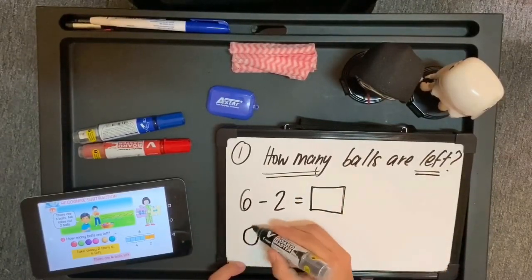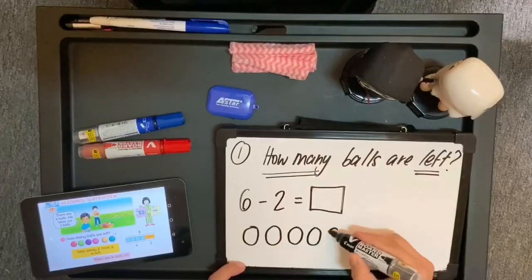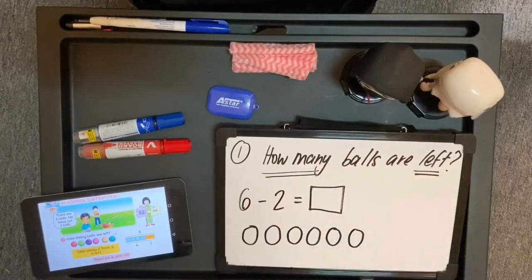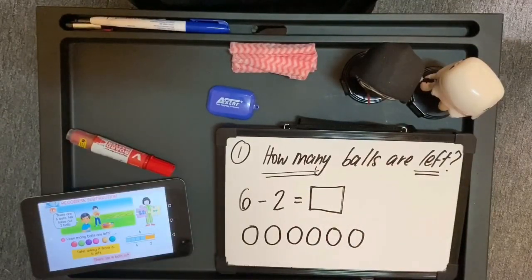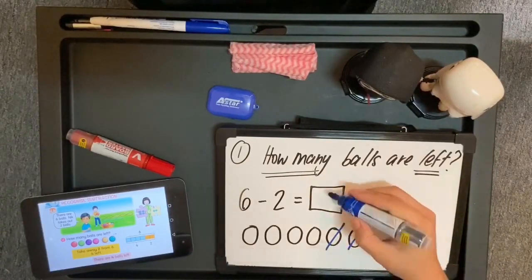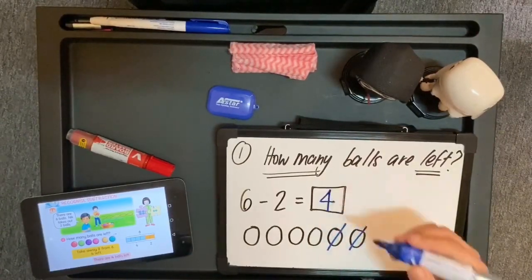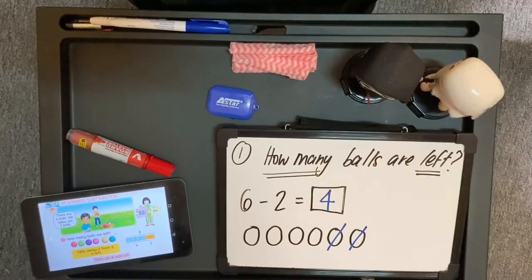Bola ada 1, 2, 3, 4, 5, 6. Ditolak 2. Kita boleh potong 2 daripada bola. Jadi, yang tinggal adalah 1, 2, 3, 4. Operasi tolak ni, konsep dia, bila menolak, nombor akan jadi berkurang.